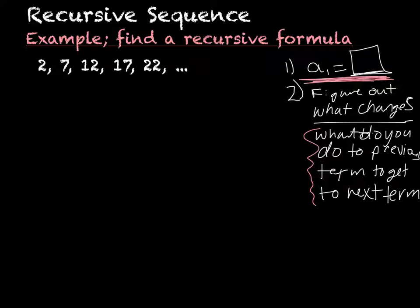On this first example: 2, 7, 12, 17, 22. If I want to find a recursive formula, the first thing I'm going to do is say A sub 1 equals something. My first term is term number 1, so A sub 1 equals 2. That is the first part — that is half of the problem.